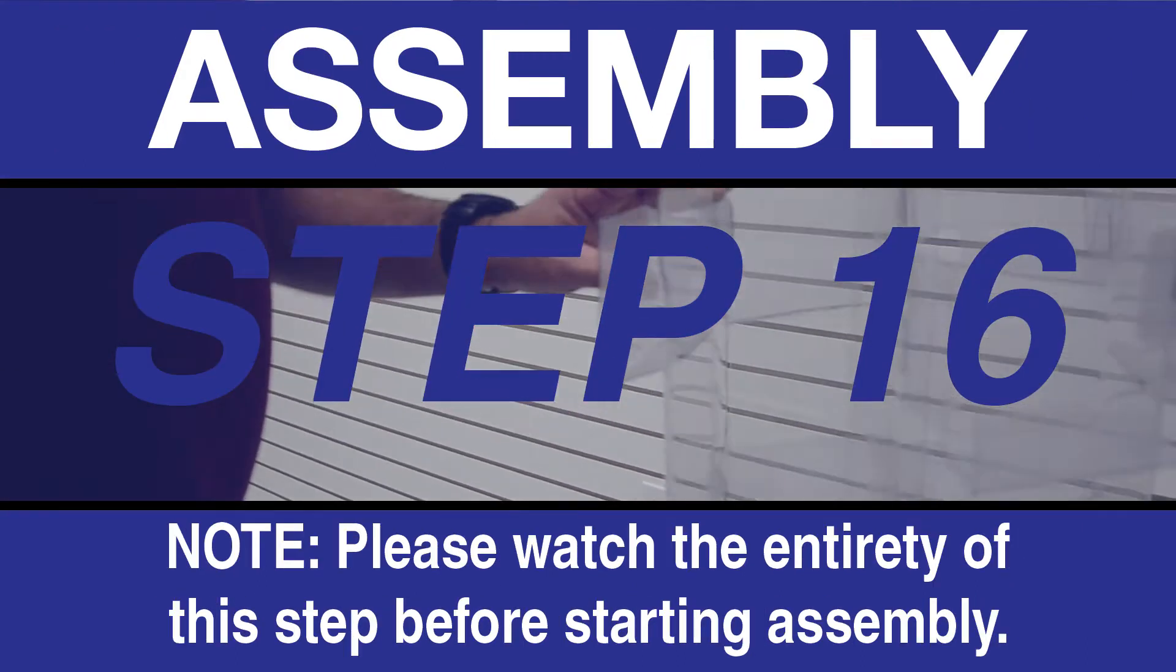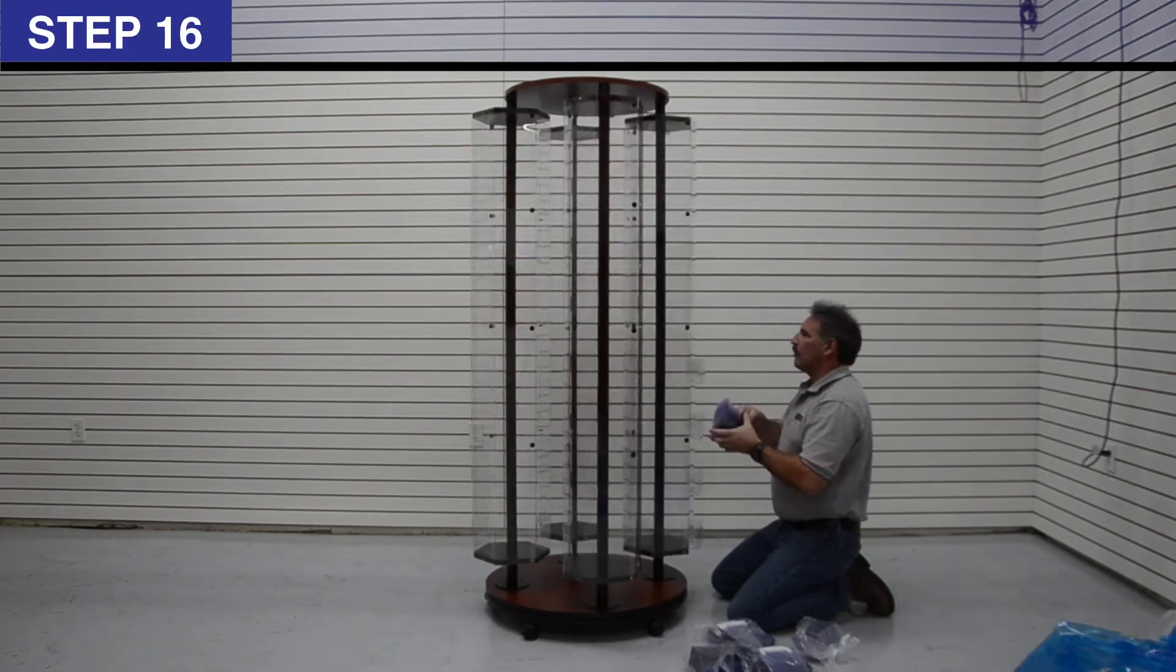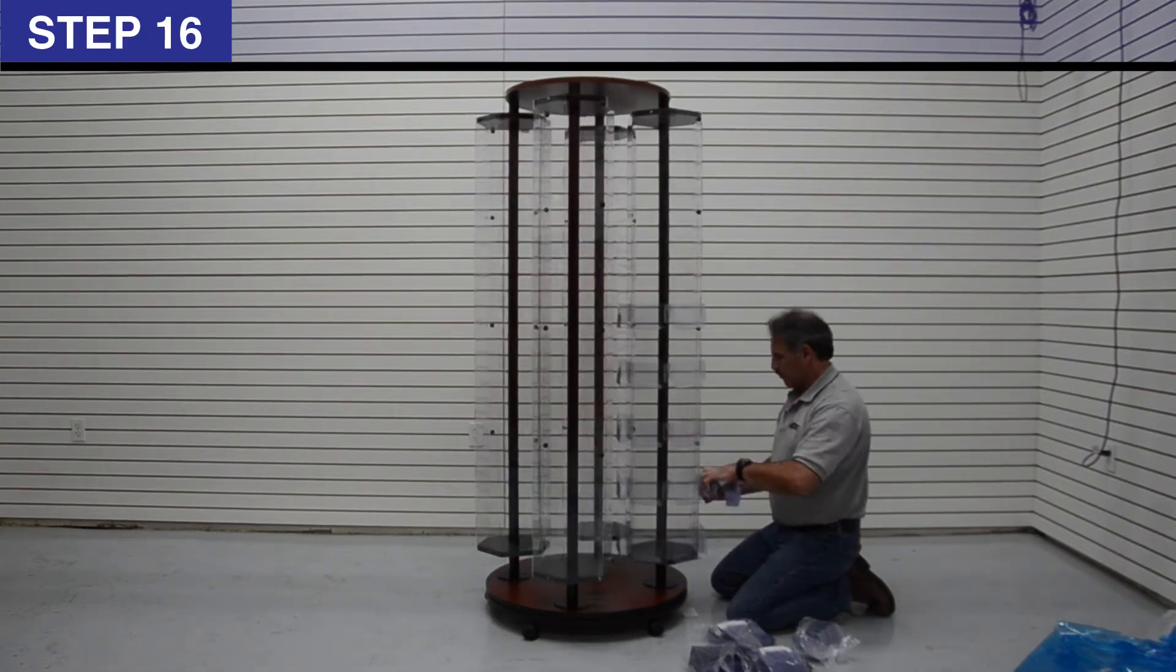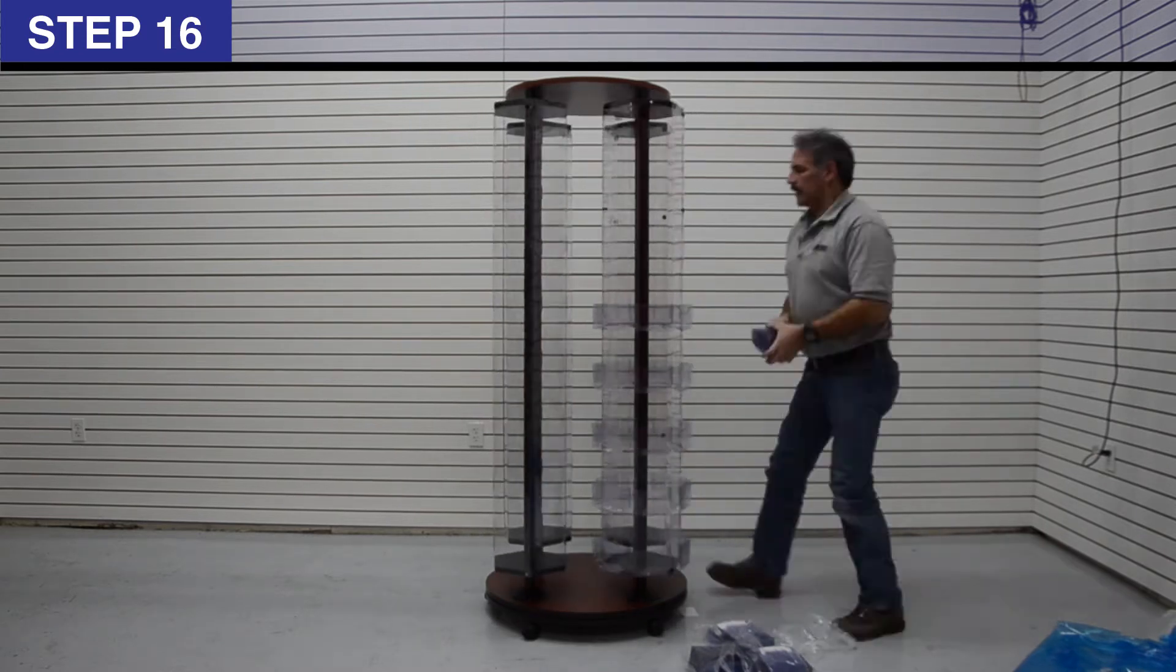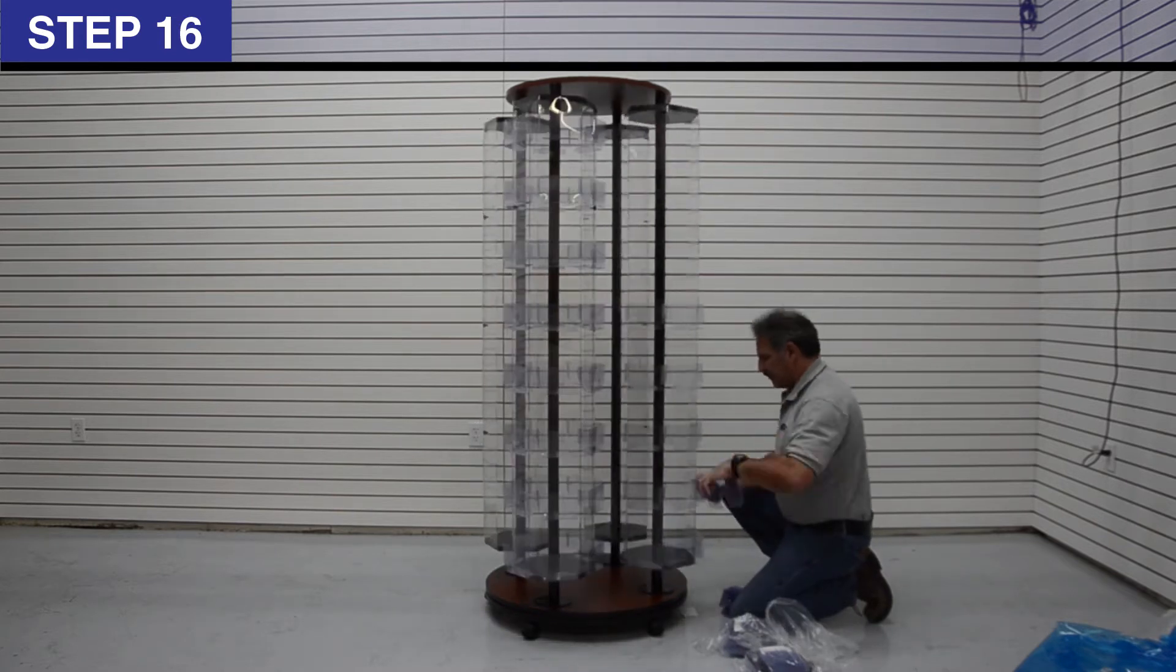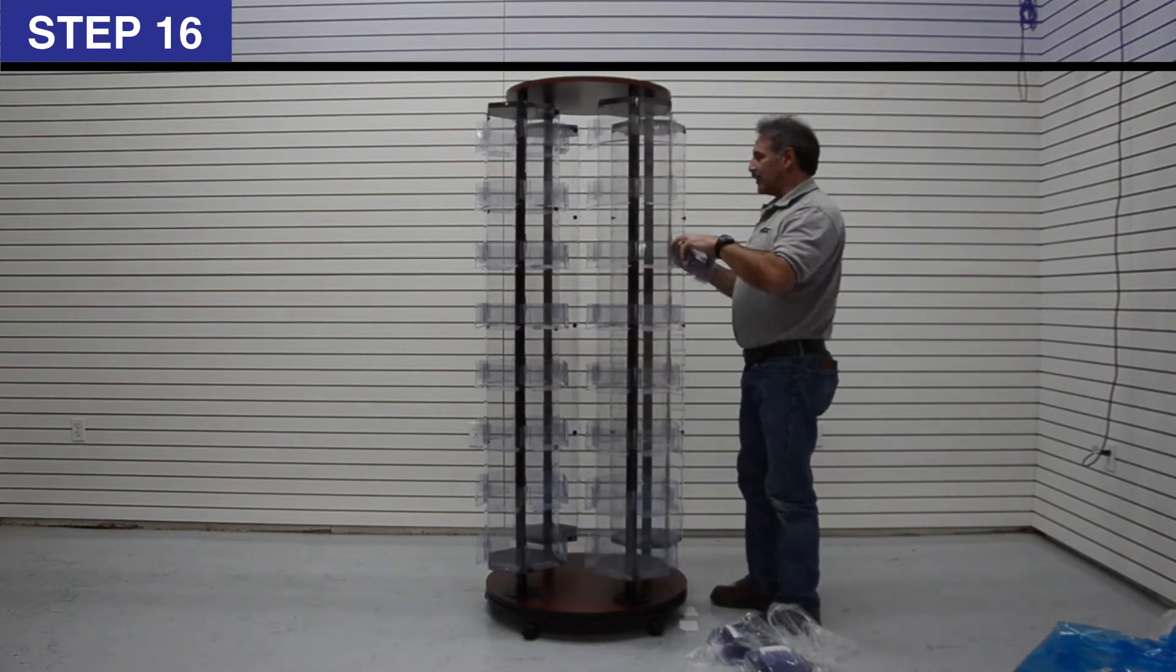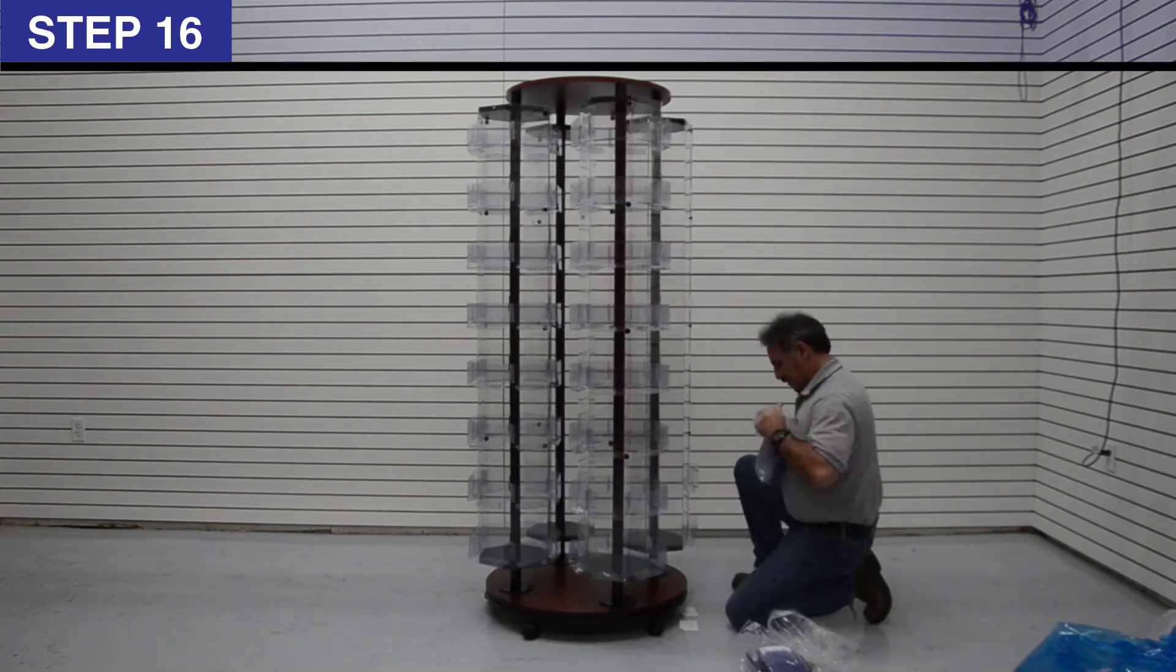Step 16: Attach 192 pockets R by hooking the tabs into the vertical slots in the tower side panels M. Each vertical slot holds 2 pockets R side by side. There are 48 pockets per tower.